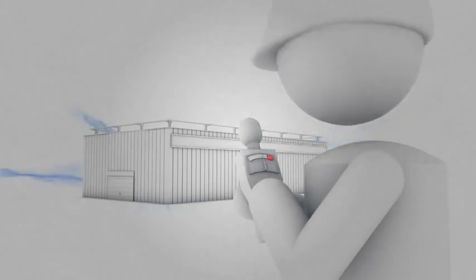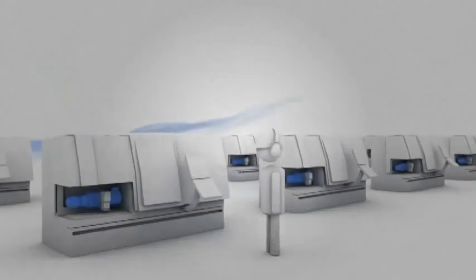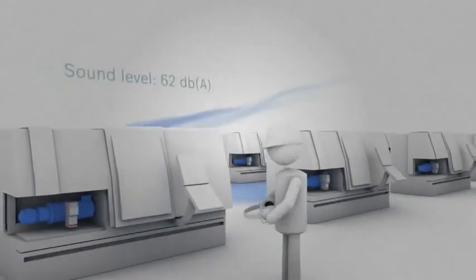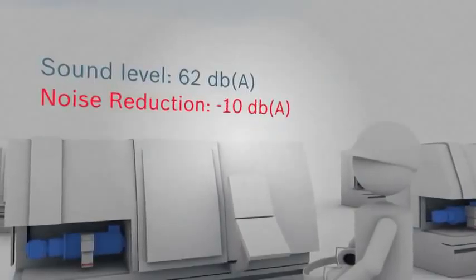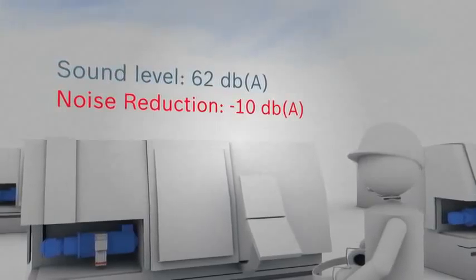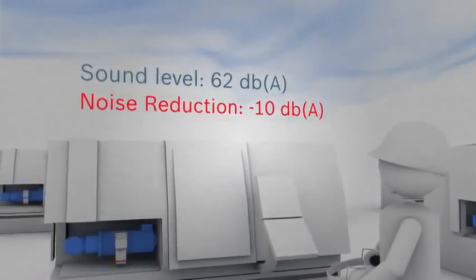Now imagine that your lathes are now equipped with our variable speed pump drives. The sound level sinks to 62 dBA. That's 10 fewer decibels, effectively halving the perceived volume.